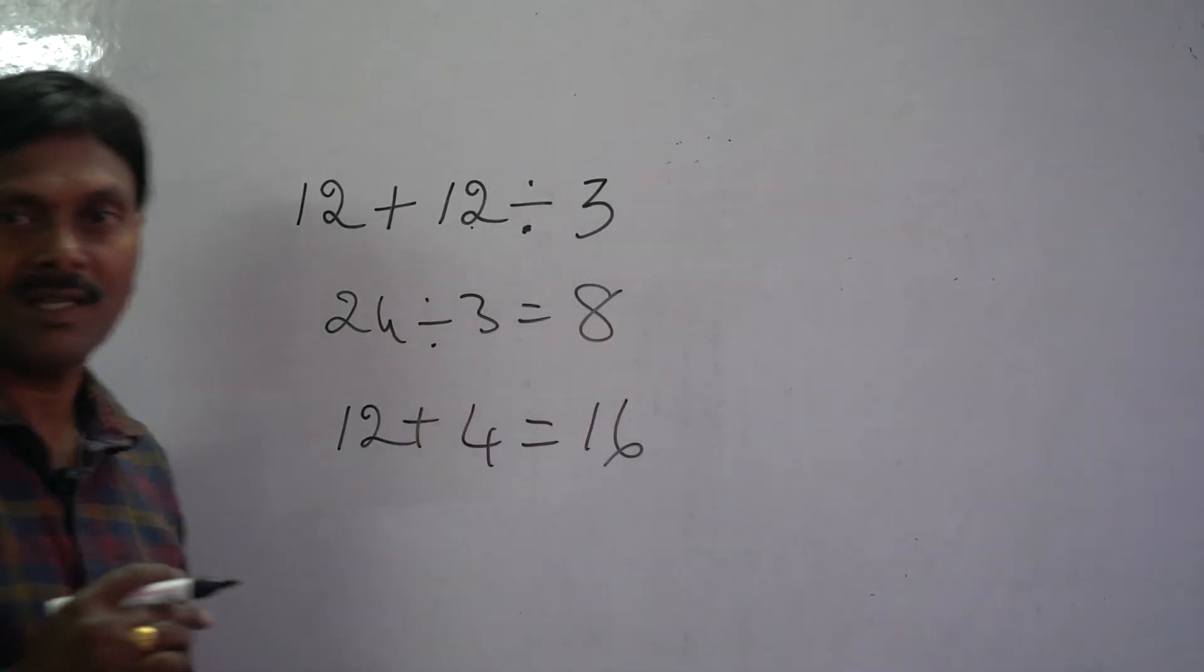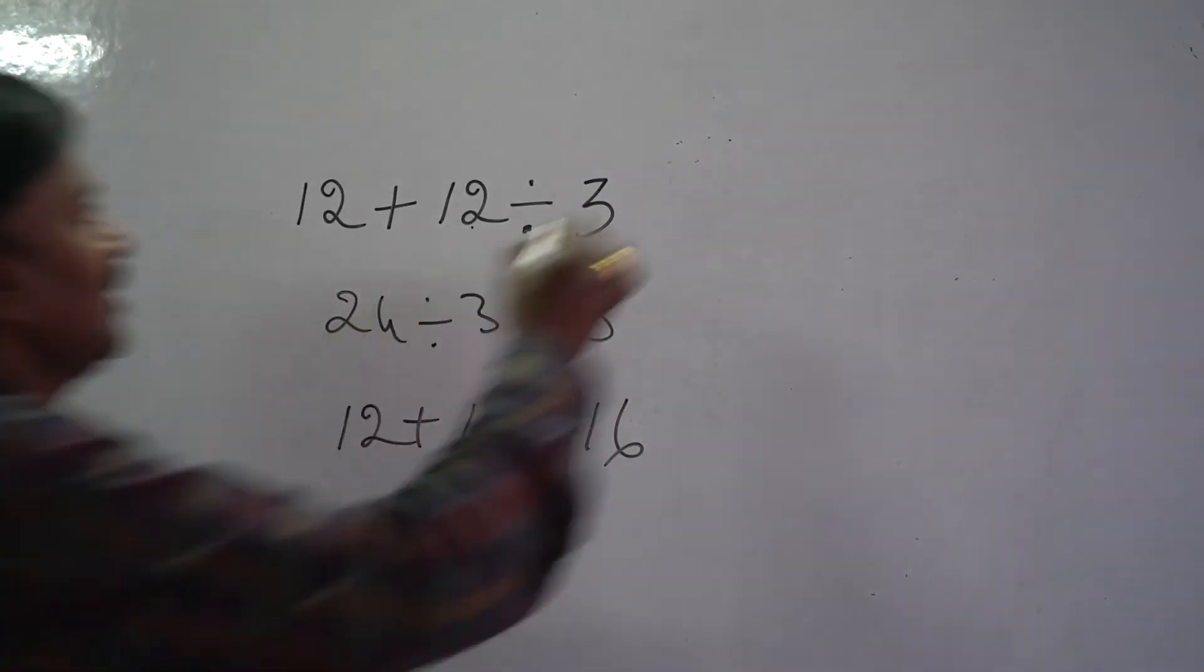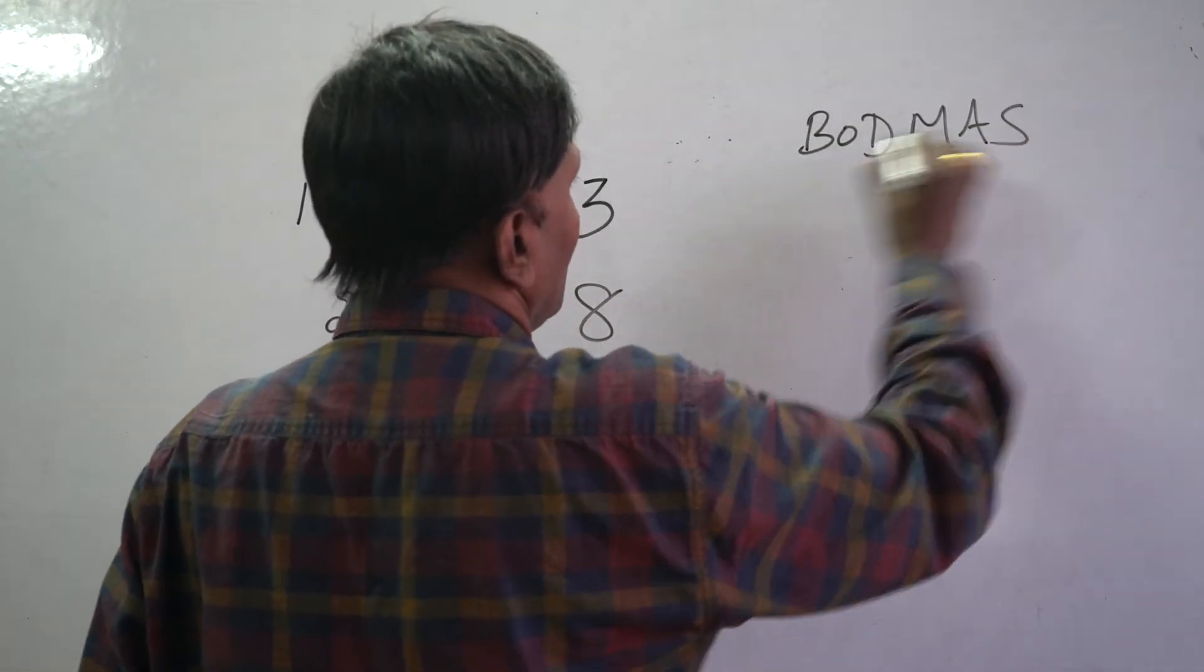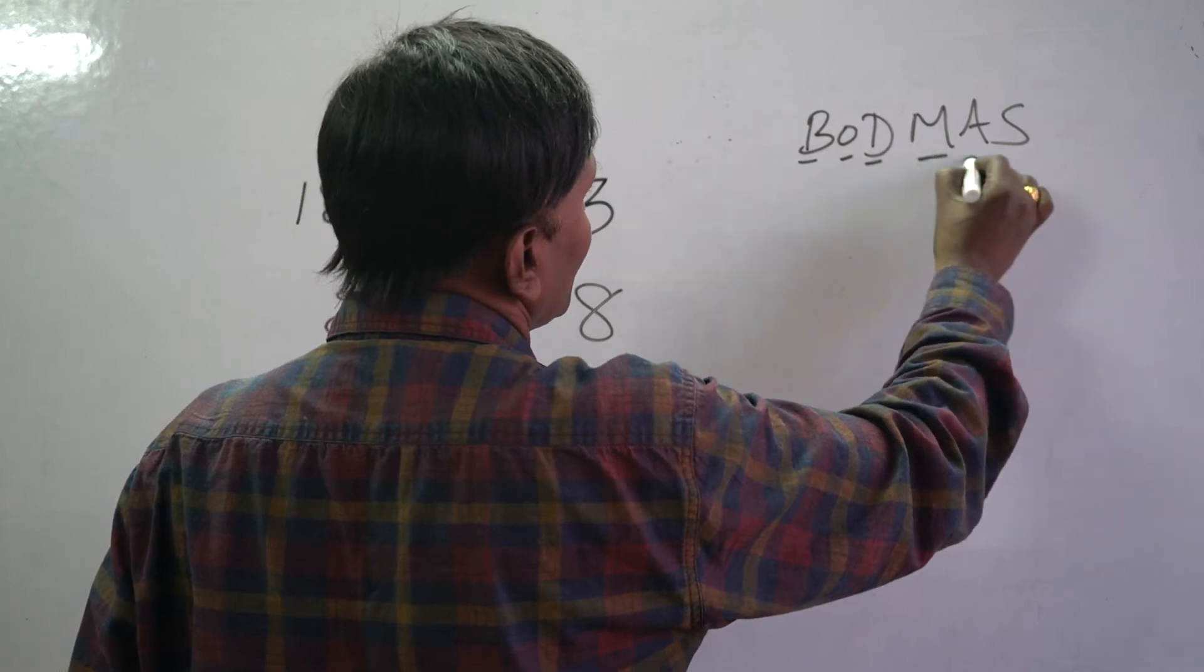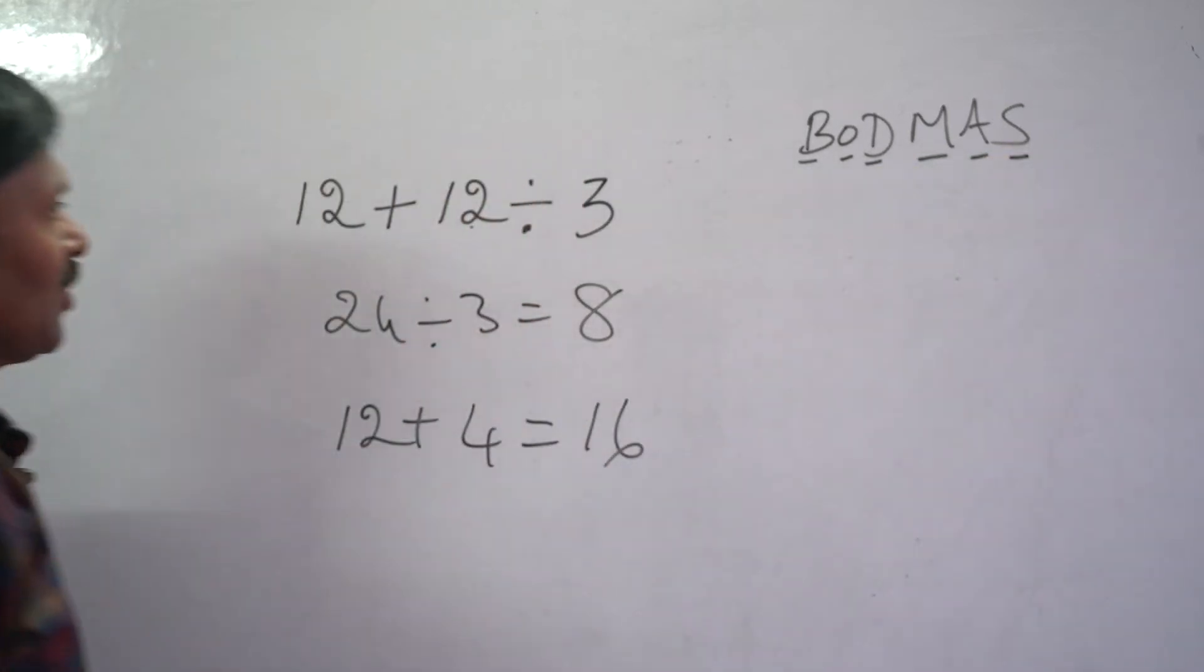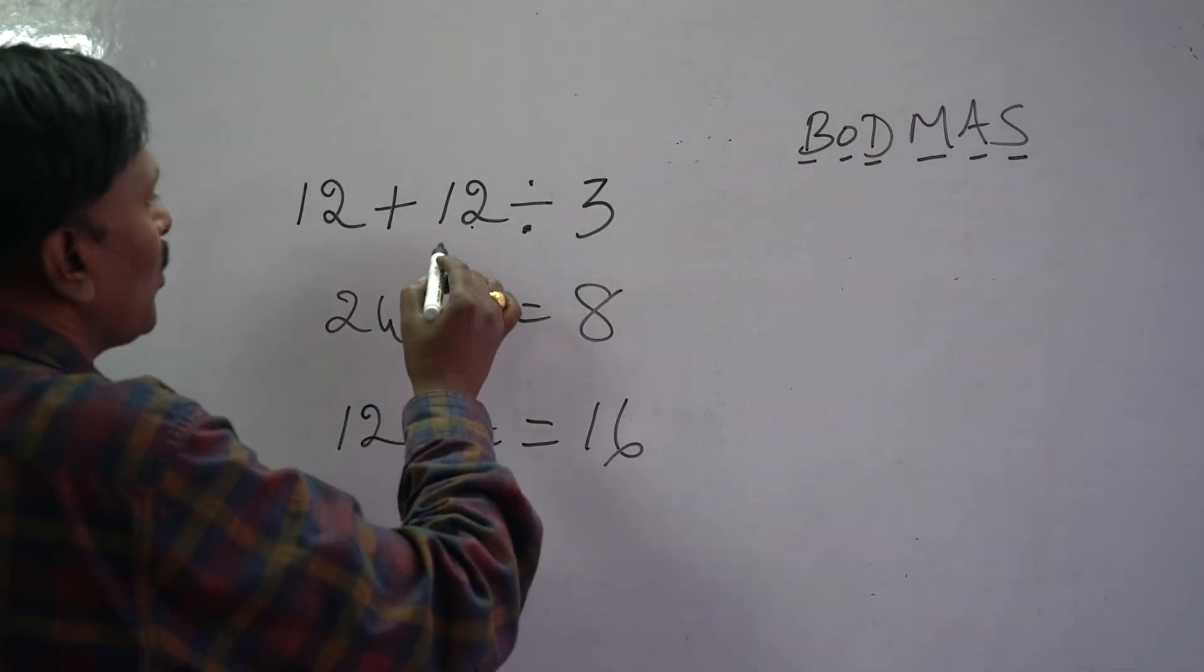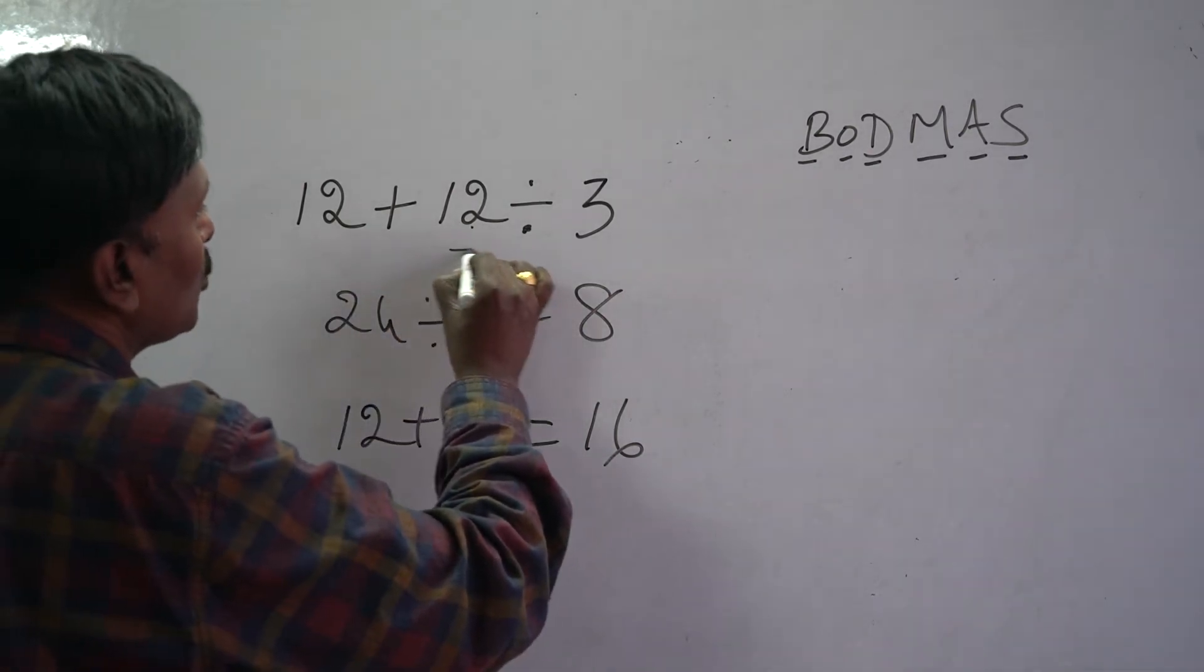We know that BODMAS is brackets, of, division, multiplication, addition and subtraction. It means we have to follow the BODMAS. First of all, what we have to do is we have to do the calculations.